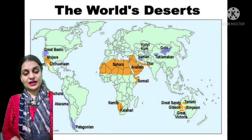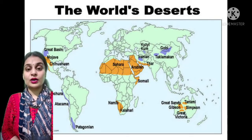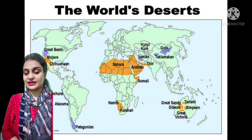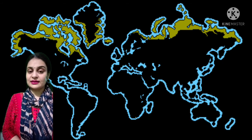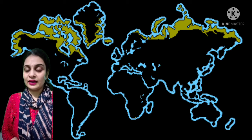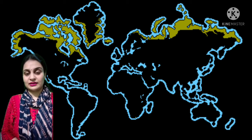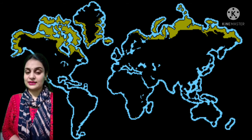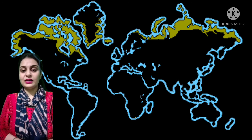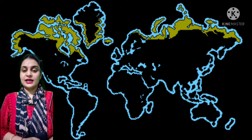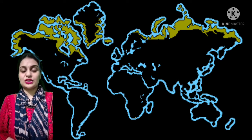The third type of deserts are called cold deserts because they are found between the poles, the Arctic Circle and the Antarctic Circle. An example of cold deserts is the Tundra in Russia. In this chapter we shall discuss about the hot desert country which is Saudi Arabia.